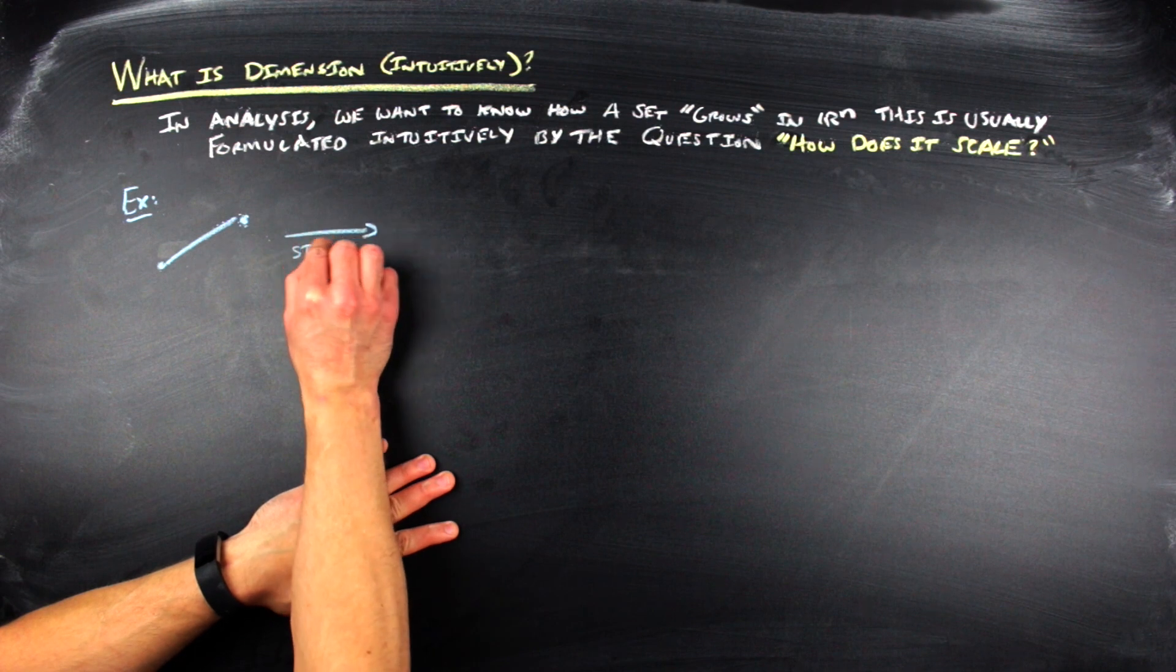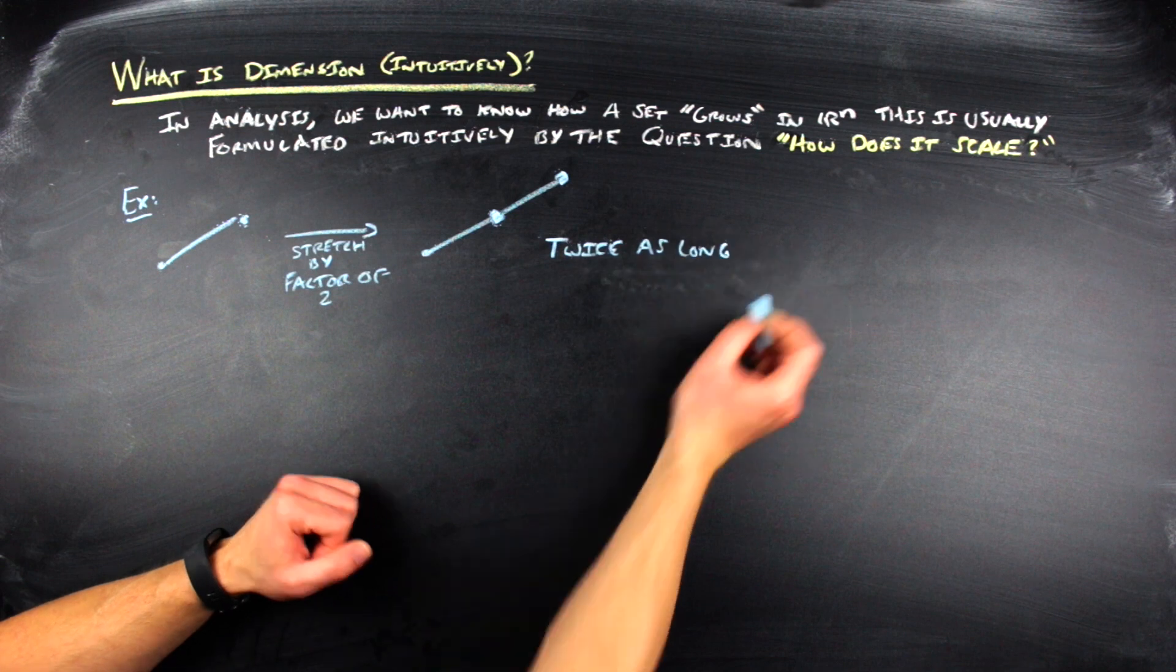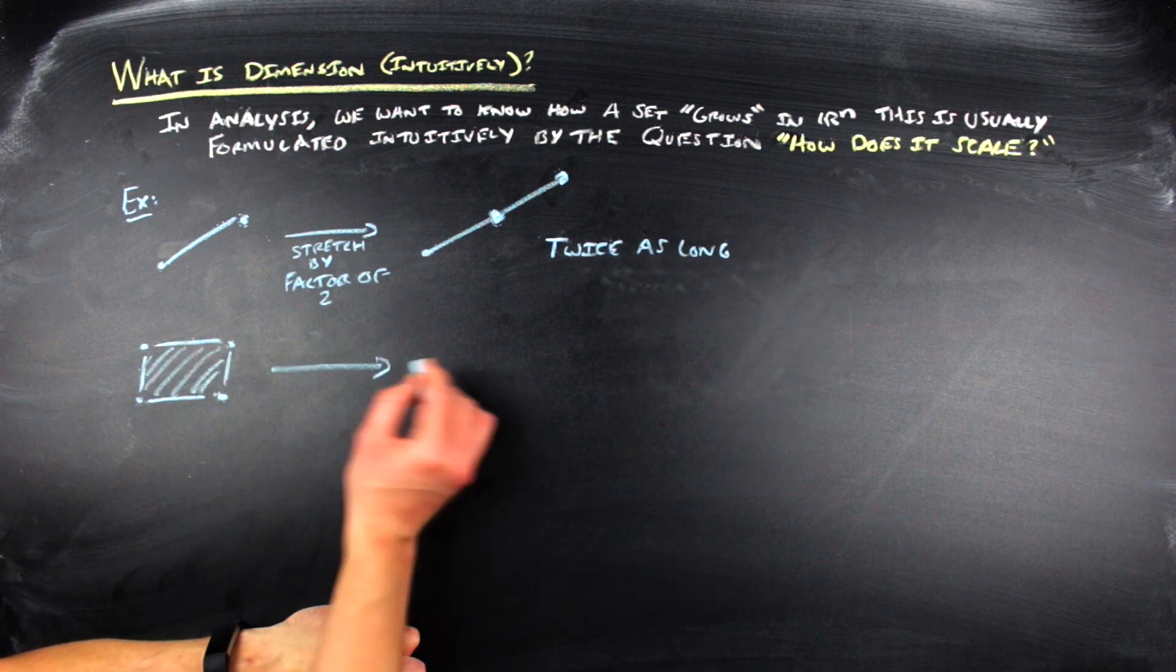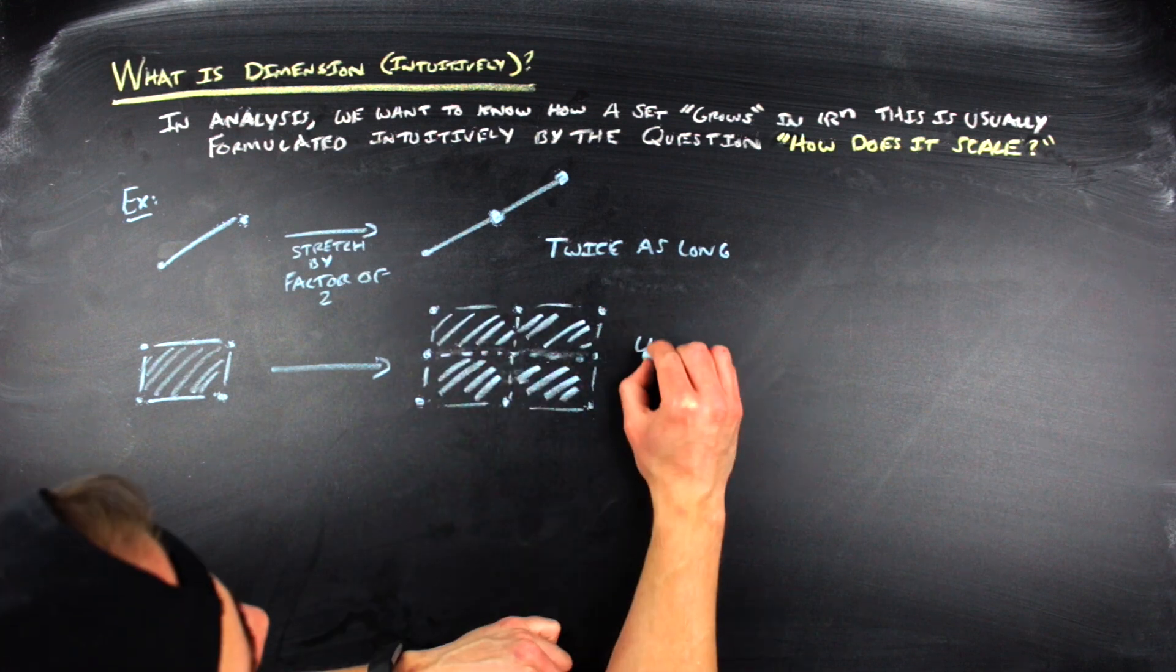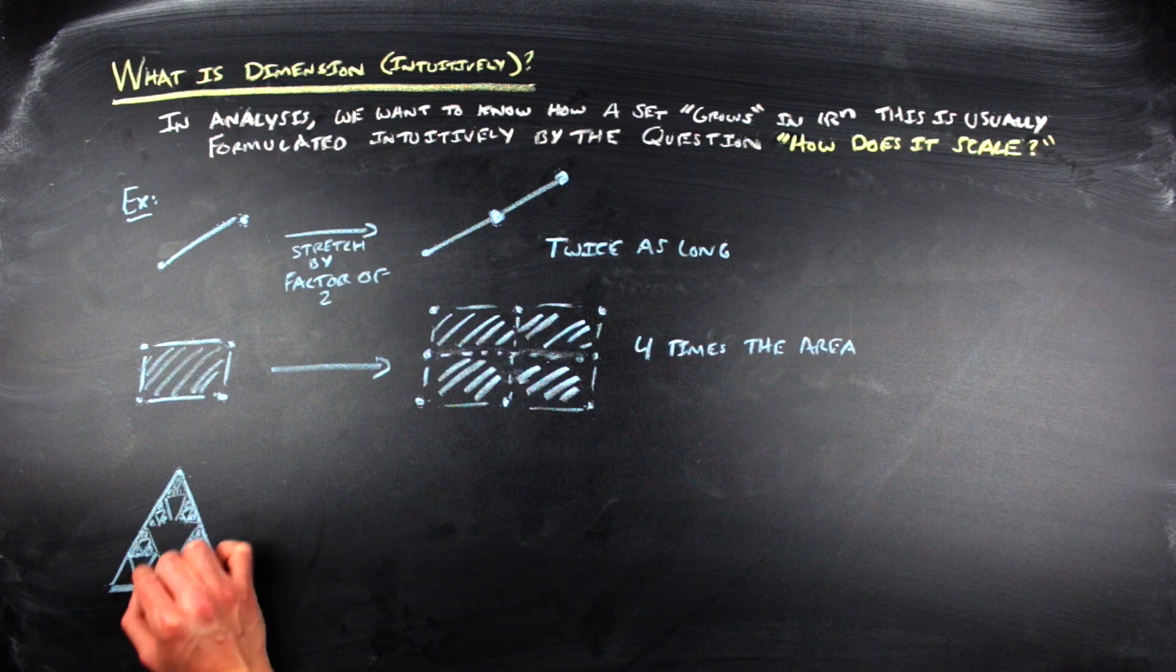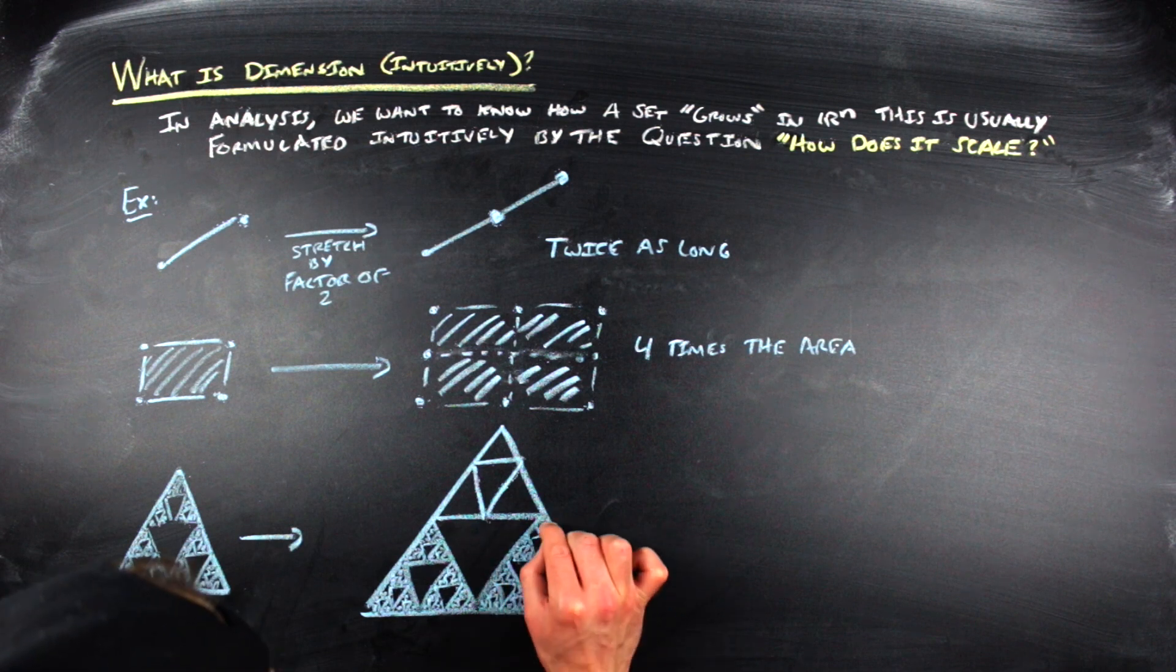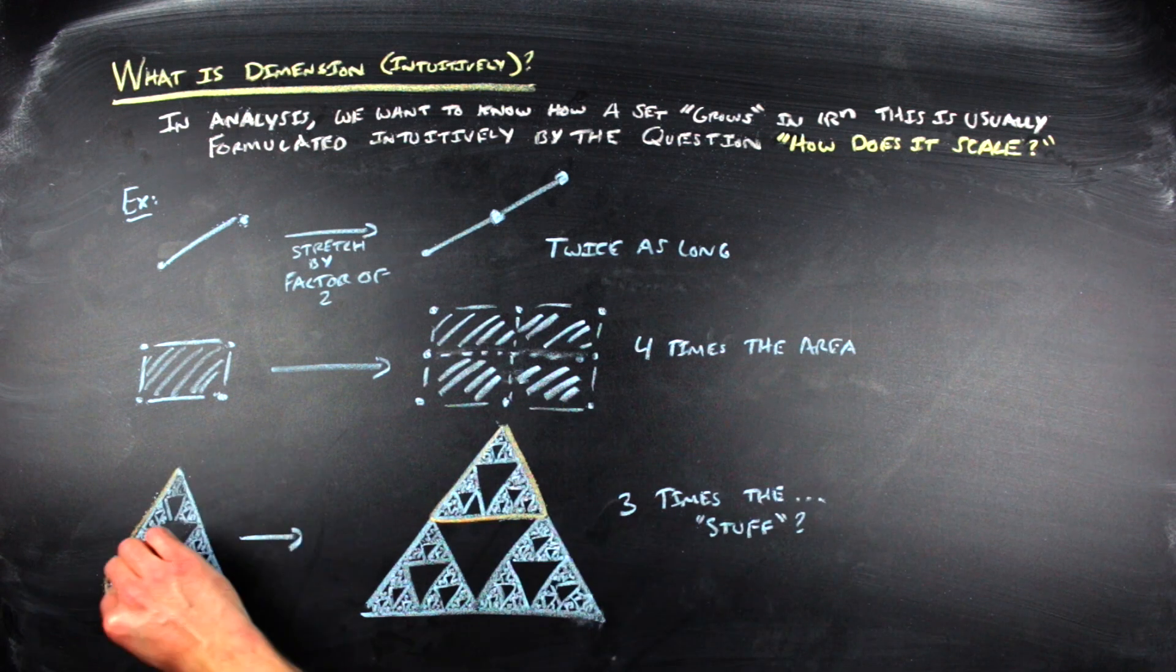Look at a line segment and stretch that by a factor of two, then you're going to get two copies of that line segment. It is quote unquote twice as long. If you do the same thing with a box and scale it up by two, you're going to get four copies of that box. In particular, there is four times the area.